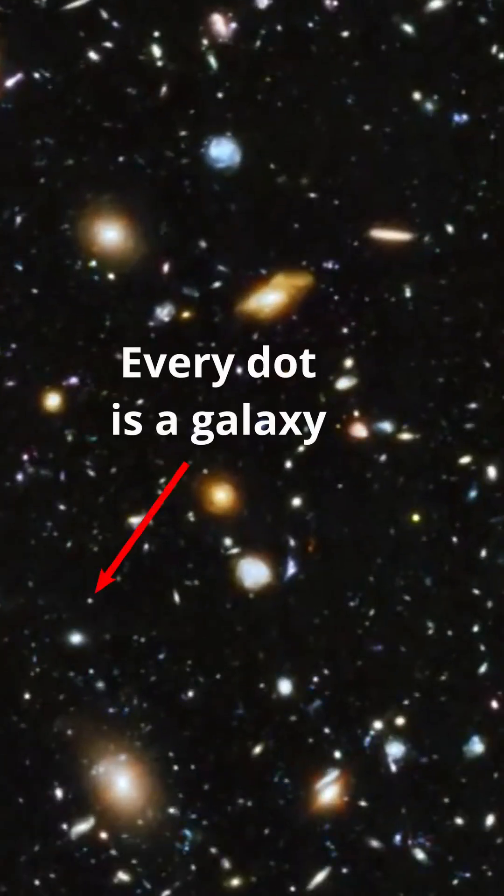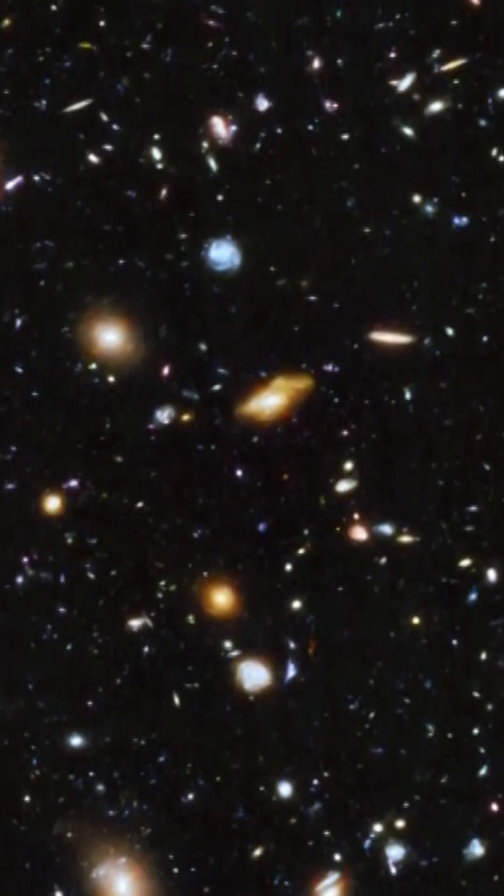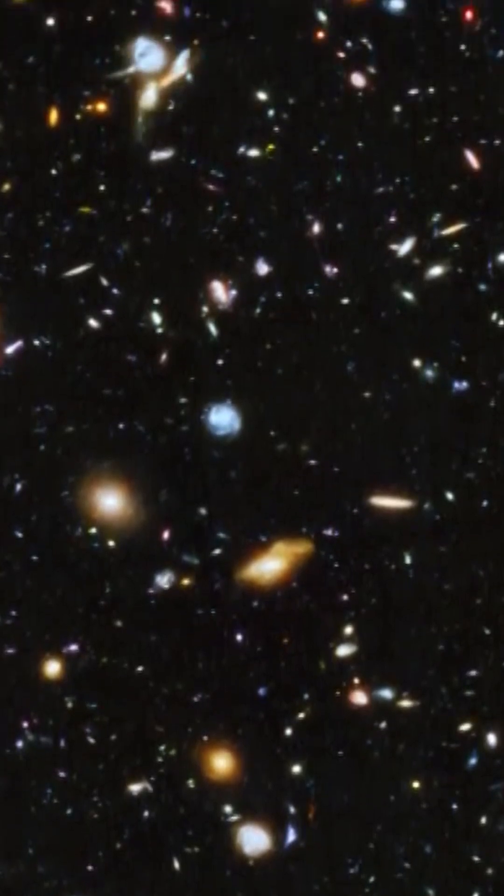Known as the Hubble Deep Field photo, this tiny patch of sky—this minute, almost insignificant patch of darkness—held a kaleidoscope of hidden galaxies.